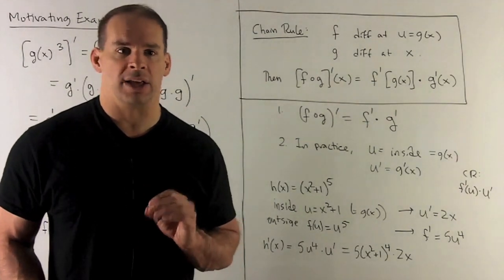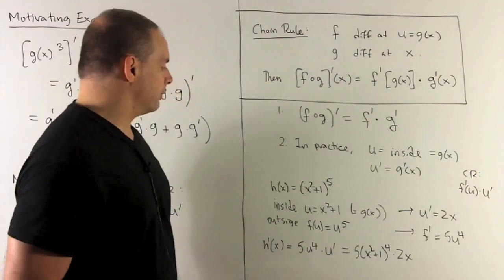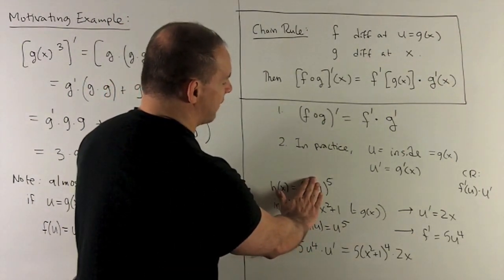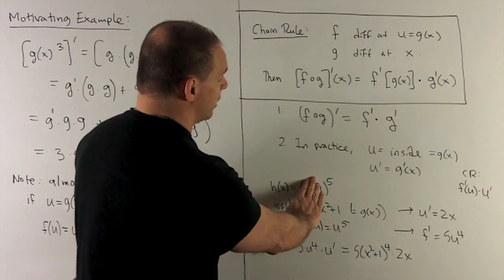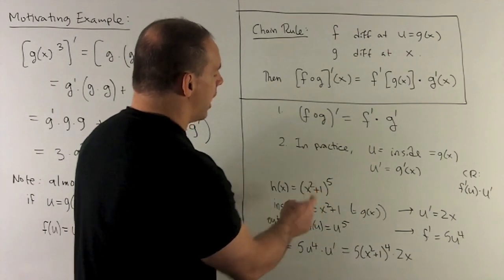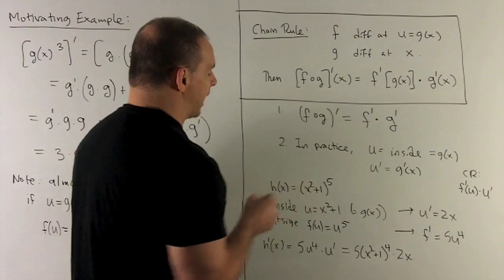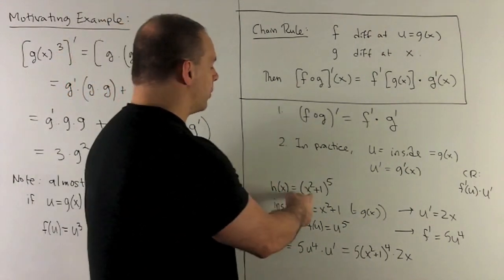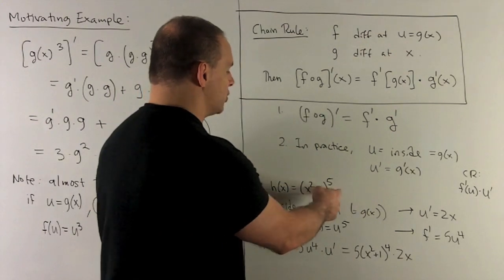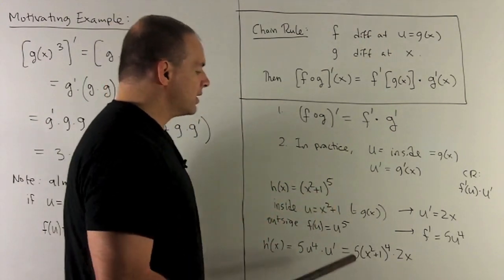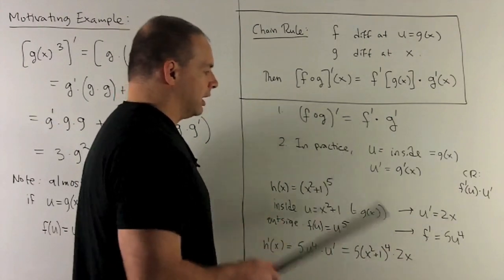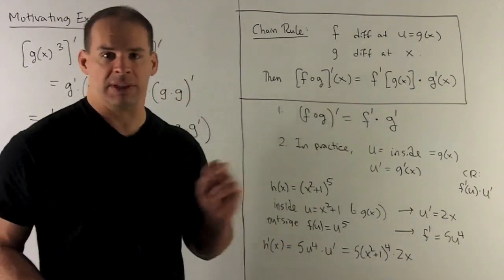There's also a quick way to do this once you get nimble with identifying inside and outside. Look at h of x, cover up the inside — you see something to the fifth power, whose derivative is 5 times something to the fourth. Uncover it: that goes back inside, giving 5 times x squared plus 1 to the fourth. Then just multiply by the derivative of the inside, which is 2x. You notice that gives exactly the same answer as the full bookkeeping approach.